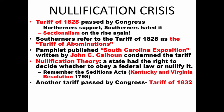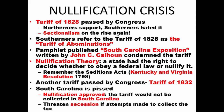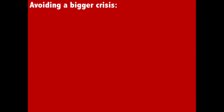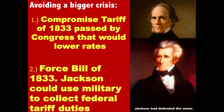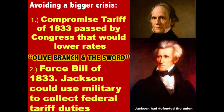In 1832, another tariff was passed — the Tariff of 1832. South Carolina was angry, and nullification was approved. They declared the tariff would not be collected in South Carolina, thereby refusing to implement a federal law, and they threatened secession if attempts were made to collect the tax. Luckily, this issue got resolved through compromise. Henry Clay helped negotiate the Compromise Tariff of 1833 that would lower the tariff rates. In addition, with the authorization of the Force Bill, Andrew Jackson threatened to use the military to collect federal tariff duties. This deal managed to avoid a bigger sectional crisis as South Carolina backed down.